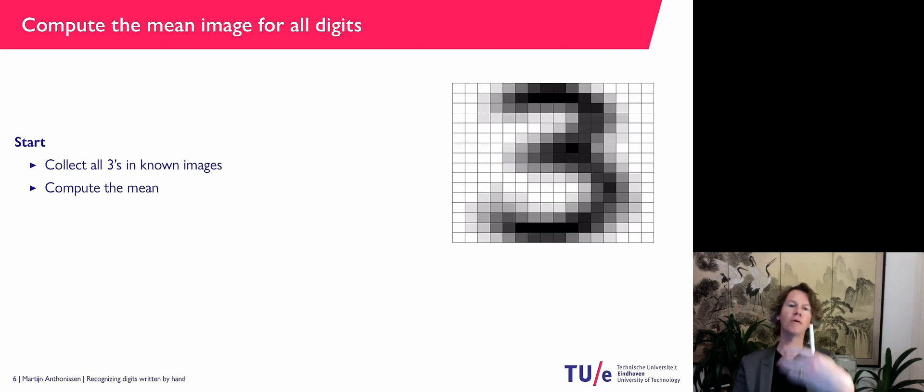So if I have two images that represent a three, I have two vectors. I can add these vectors together, divide by two, and then I have the average of them, the mean. And you can do the mean of three or of a thousand images and so on. So I did that for all the threes.